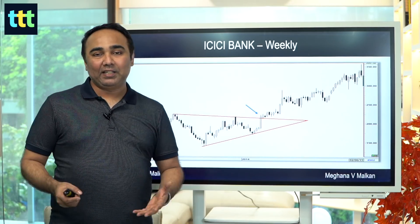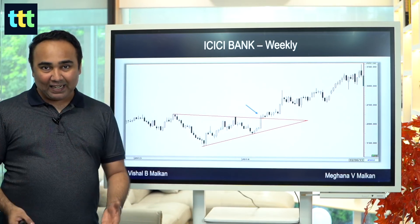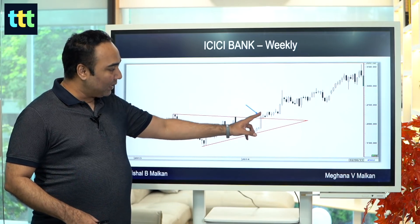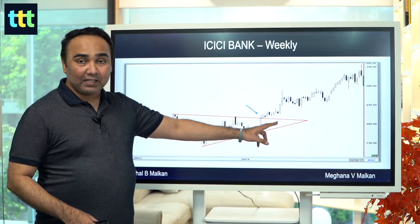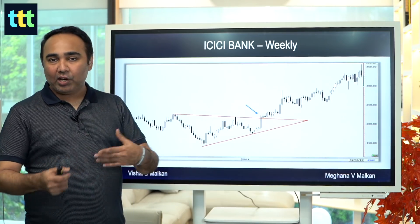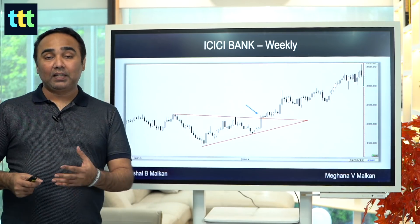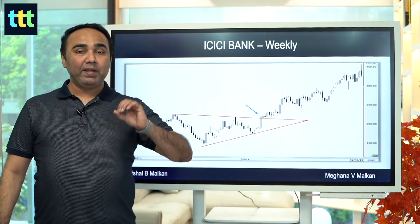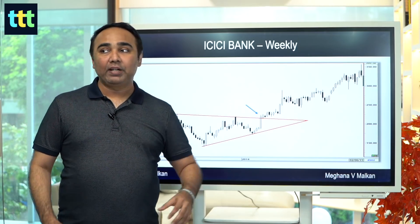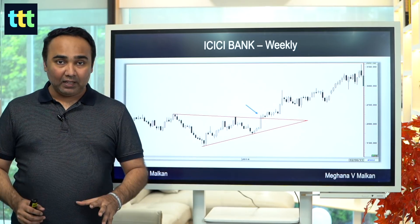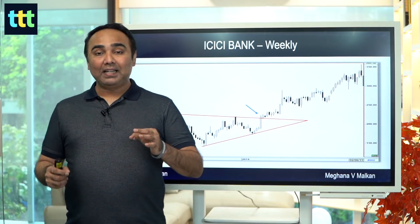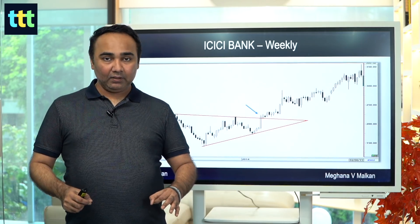If it crosses 60 on RSI, that's great. Plus, once it goes and makes a CIP — which is change in polarity of the triangle — that's great. That would be an excellent opportunity to buy further.